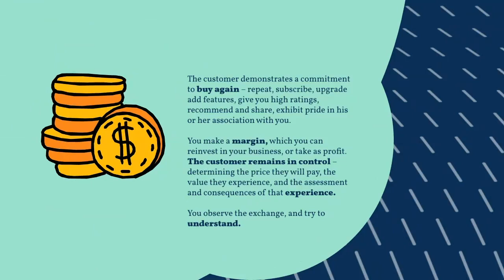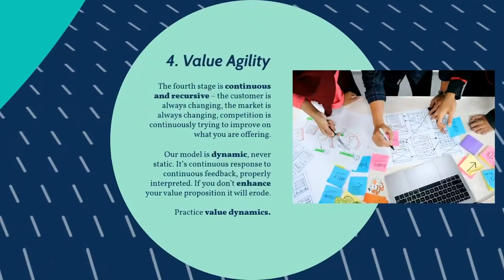The customer remains in control, determining the price they will pay, the value they experience, and the assessment and consequences of that experience. You observe the exchange and try to understand. The fourth stage is continuous and recursive. The customer is always changing, the market's always changing, and competition is continuously trying to improve on what you are offering. Our model is dynamic, never static. It's continuous response to continuous feedback, properly interpreted. If you don't enhance your value proposition, it will erode. Practice value dynamics.